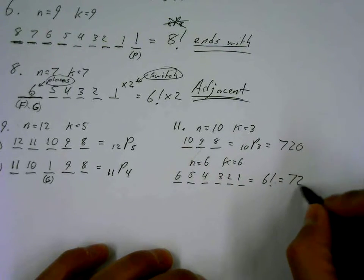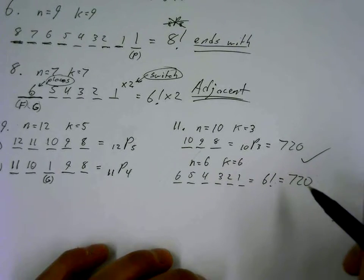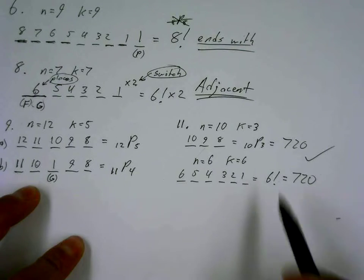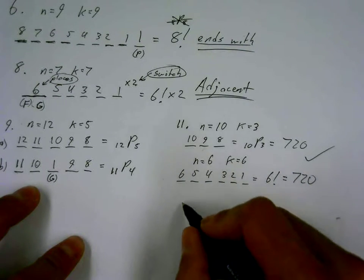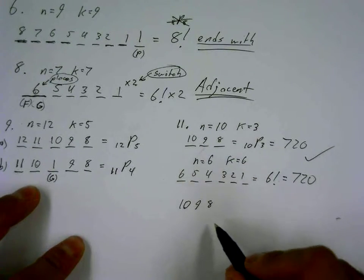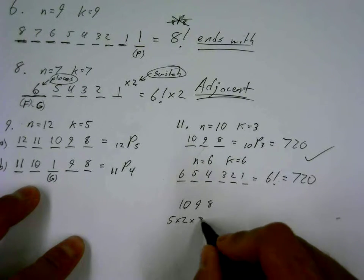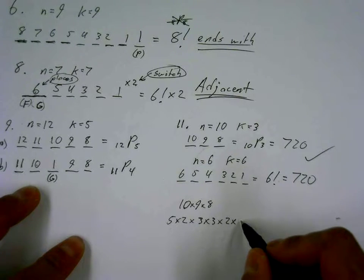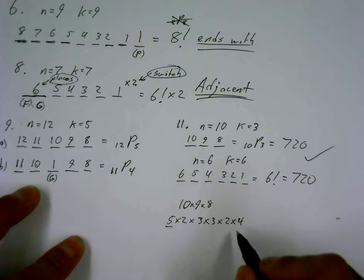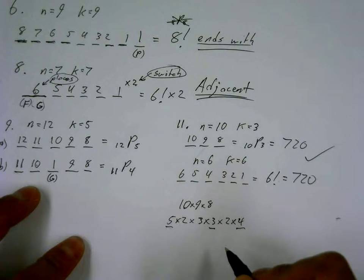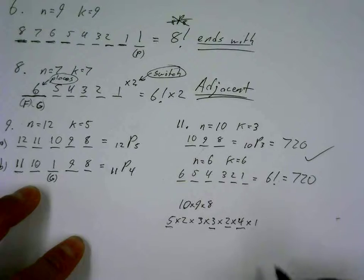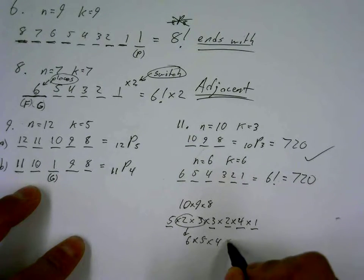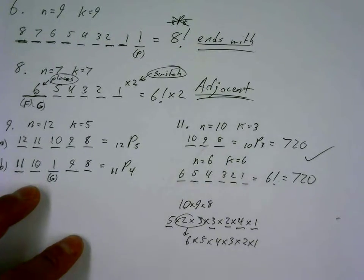We can also show this algebraically by prime factoring: 10 = 5 × 2, 9 = 3 × 3, 8 = 2 × 4. So 10 × 9 × 8 = 5 × 2 × 3 × 3 × 2 × 4. Rearranging the factors gives us 6 × 5 × 4 × 3 × 2 × 1, which is exactly 6!. Your teacher probably wants some written explanation too, but that's how you show it by factoring.